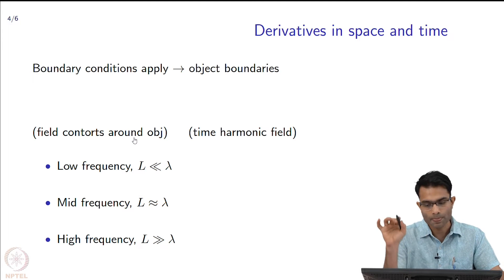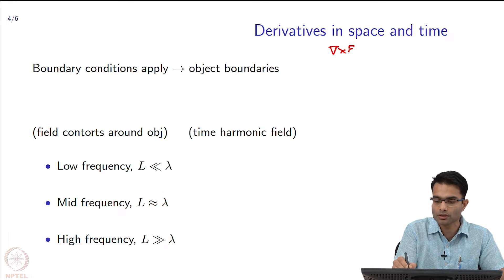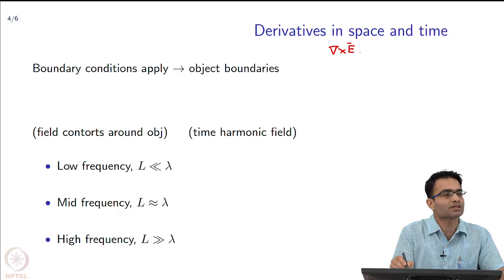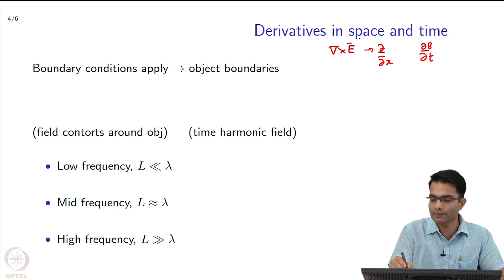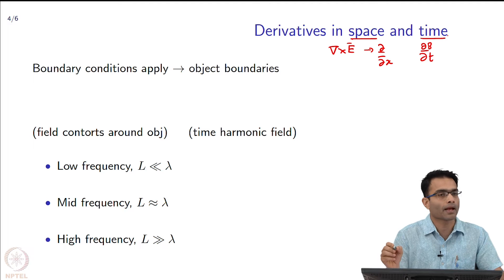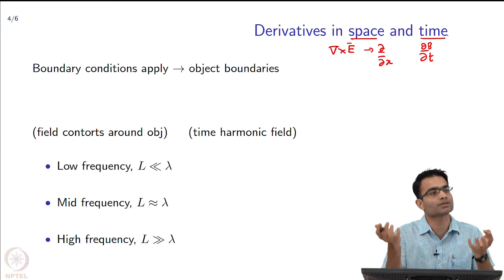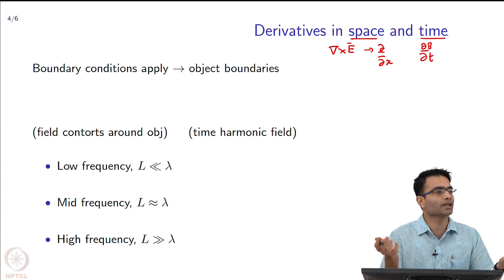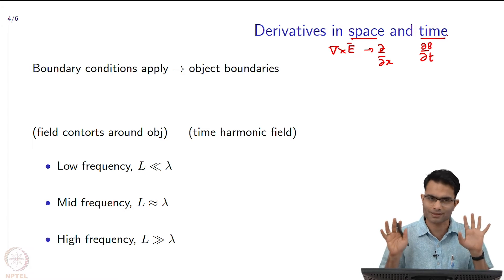Let us start from the top. Maxwell's equations have a derivative in space and a derivative in time — they have terms like del cross E. When I expand this, this is a spatial derivative with terms like d/dx, and they also have terms like a time derivative. So there is a derivative in space and a derivative in time. The simplest thing you can do is find out the relative weight of these two derivatives. If one is much bigger than the other, I can ignore the small one; if they are comparable I must keep both — that is the basic idea.